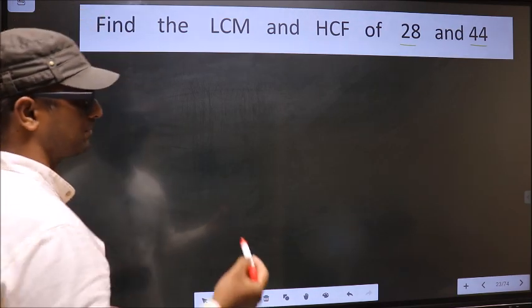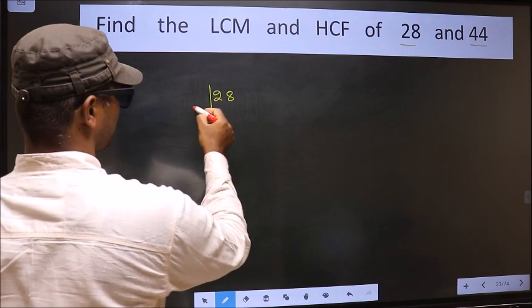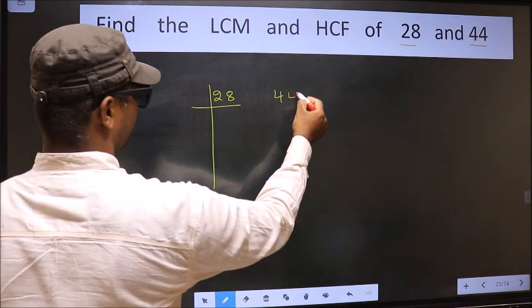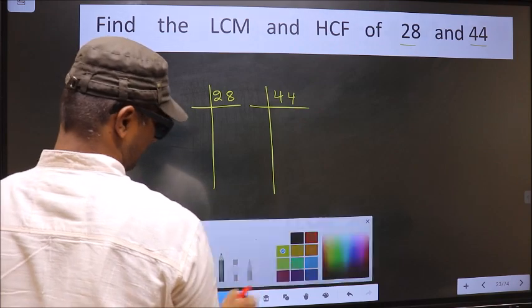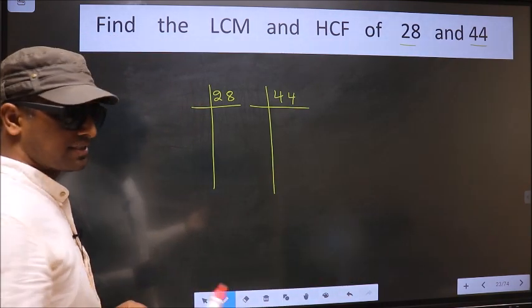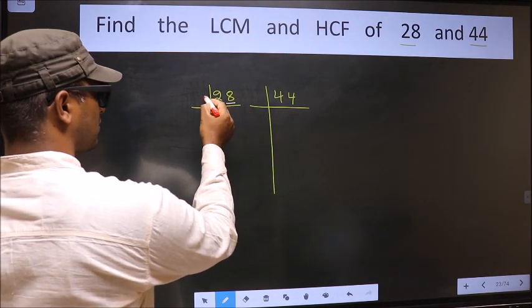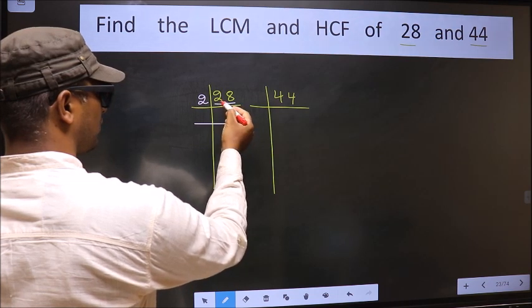That is, 28 and 44. Next, for this number, last digit 8 is even, so we take 2 here. The first number 2. When do we get 2 in 2 table? 2 times 1 is 2.